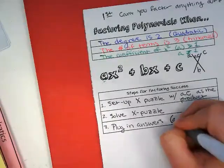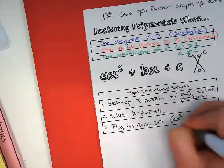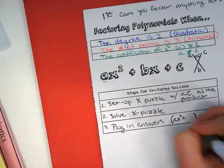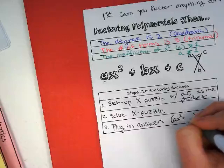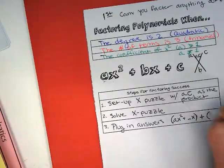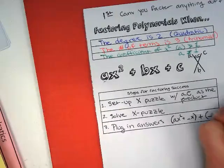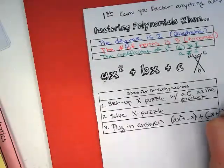In the first set, we'll have ax squared plus our solution times x. And in the second one, we'll have our second answer times x plus c.